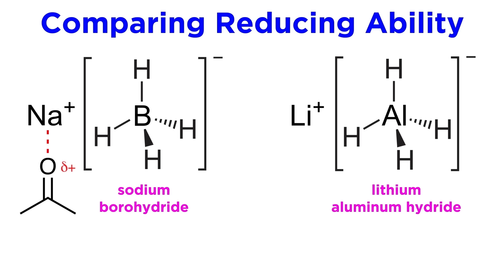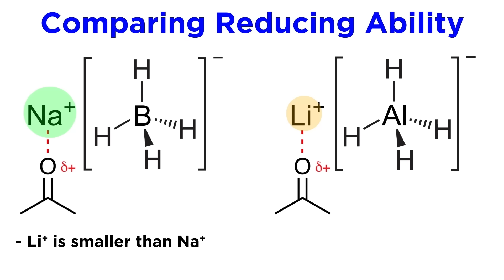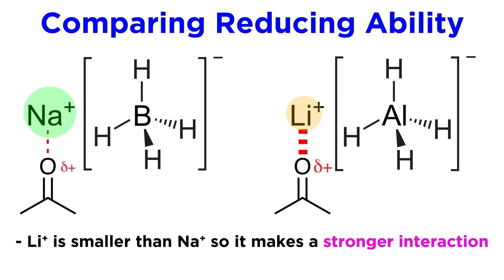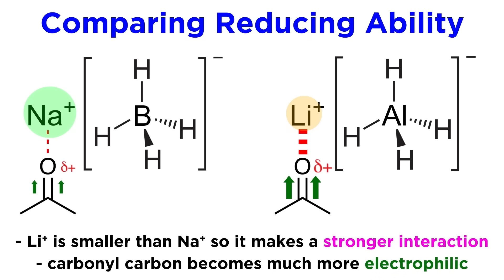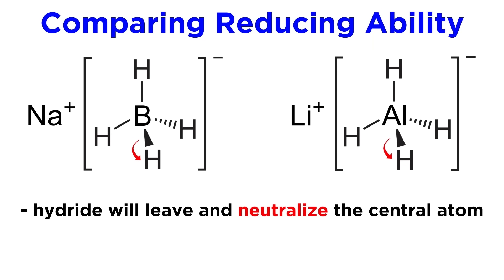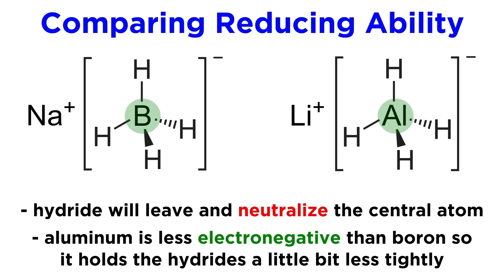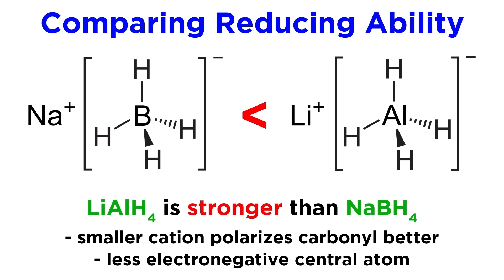Let's compare that with lithium aluminum hydride, which is similar, just with an aluminum atom instead of boron — which is negatively charged for the same reasons — and a lithium counterion instead of sodium. First, lithium is a smaller ion than sodium, which means it is a better Lewis acid, so it will make a stronger interaction with the oxygen, which results in greater electrophilicity for the carbonyl carbon, making it much more susceptible to nucleophilic attack by a hydride. Second, when a hydride leaves this complex, it involves a hydrogen atom leaving with the electrons in this bond, which neutralizes the central atom. Since aluminum is less electronegative than boron, being in the period below, it is holding on to those hydrogen atoms less tightly, so the hydrides are more readily available for nucleophilic attack. These two trends combine to make lithium aluminum hydride a much stronger reducing agent than sodium borohydride, and so we would have to strategically select one of these reducing agents over the other depending on precisely what transformation we are attempting to induce.